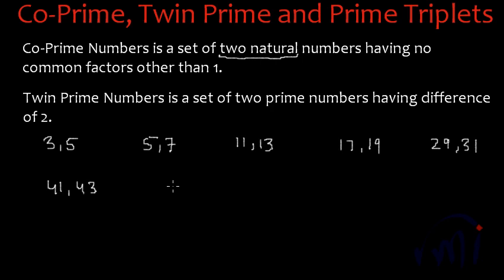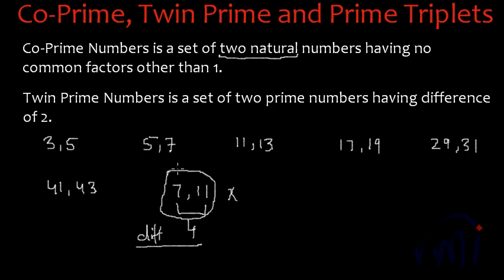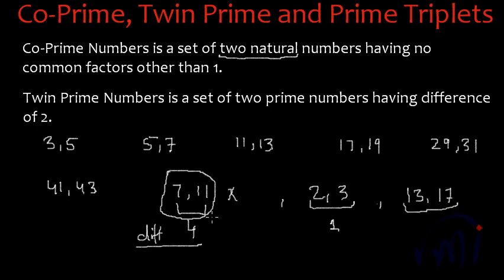But 7 and 11 is not a set of twin prime numbers because the difference between them is 4. If the difference is not equal to 2 then they are not called twin prime numbers. They can be co-prime numbers because their common factor is 1, but 7 and 11 is not a set of twin prime numbers. Similarly, 2 and 3 is also not a set of twin prime numbers because the difference is 1, and 13 and 17 also won't be referred to as twin prime numbers.